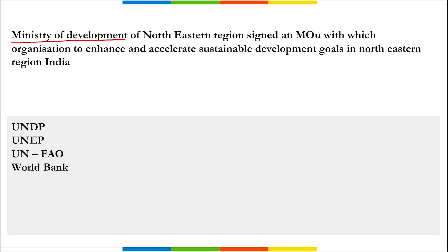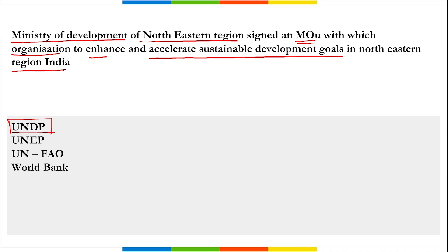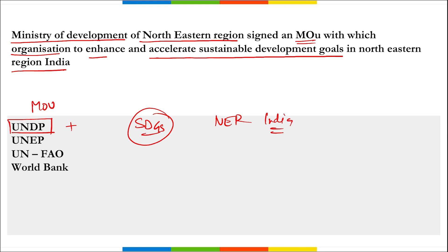The Ministry of Development of Northeastern Region (DONER) signed a memorandum of understanding with UNDP, the United Nations Development Programme, to enhance and accelerate the sustainable development goals in the Northeastern region of India. Under this MOU, UNDP will provide technical support including fast-tracking progress on SDGs, monitoring, evaluation, capacity building, support in development of emerging technologies in governance, and scaling up of good practices.